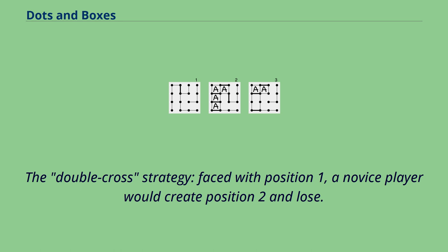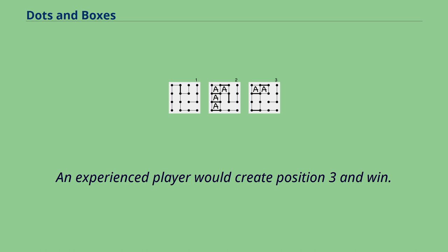The double-cross strategy: faced with position 1, a novice player would create position 2 and lose. An experienced player would create position 3 and win.